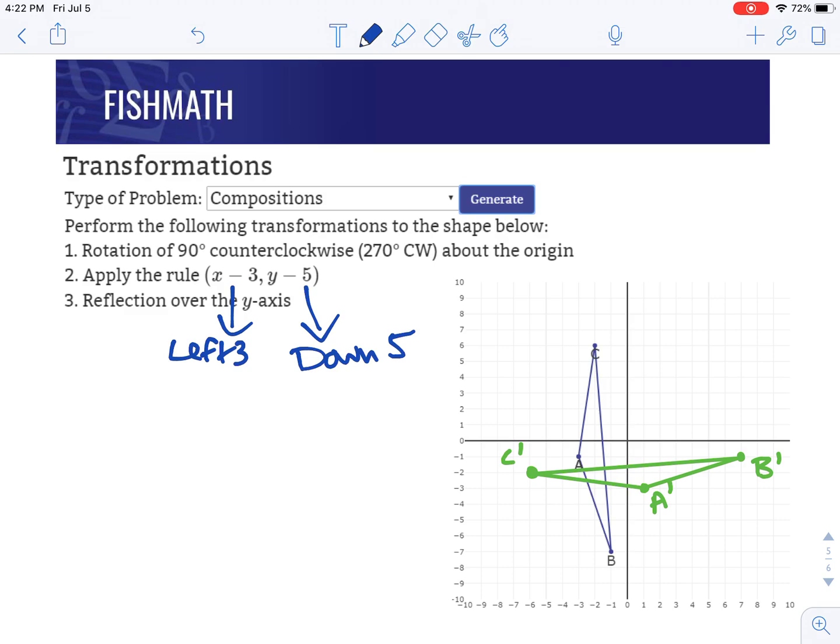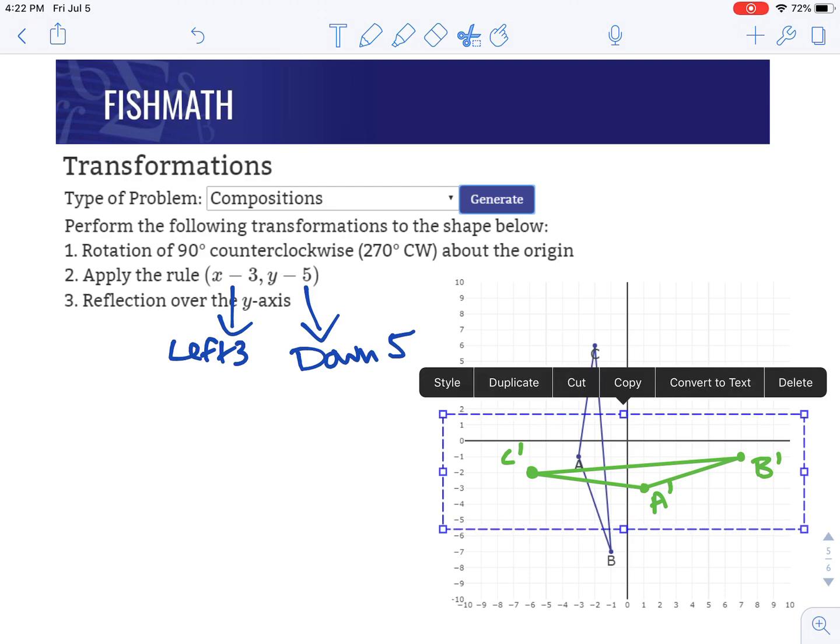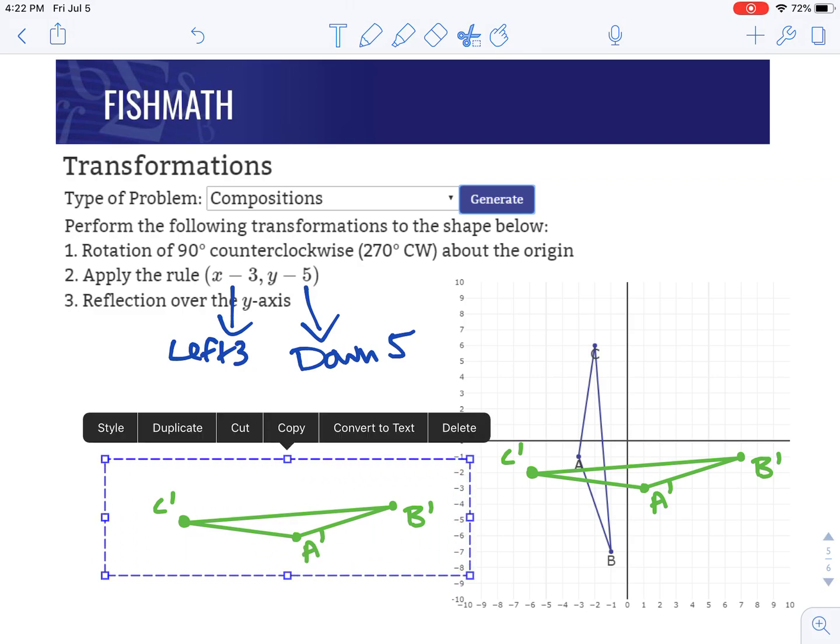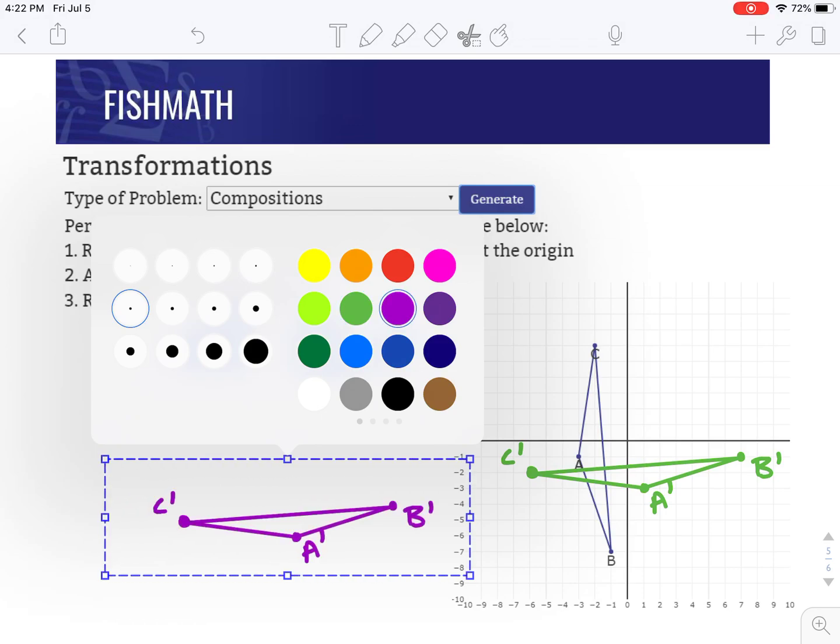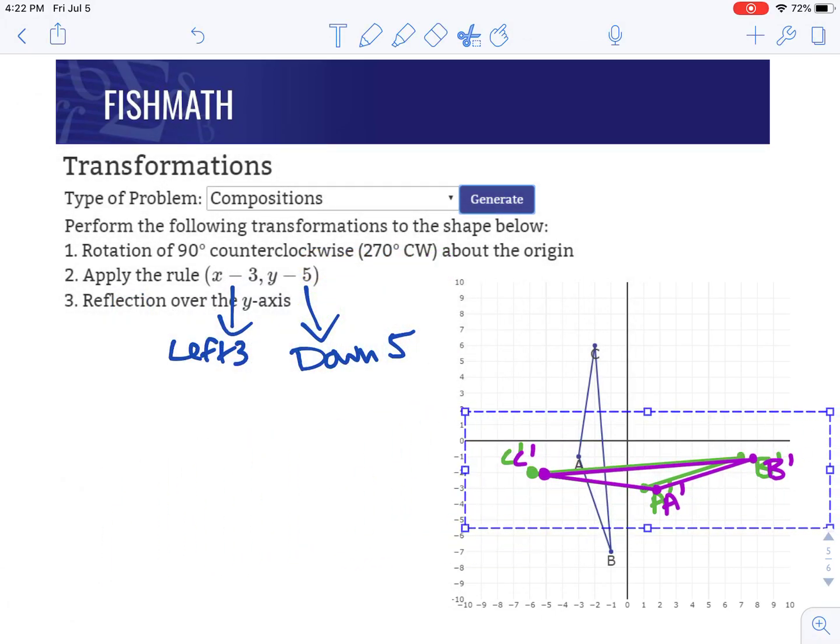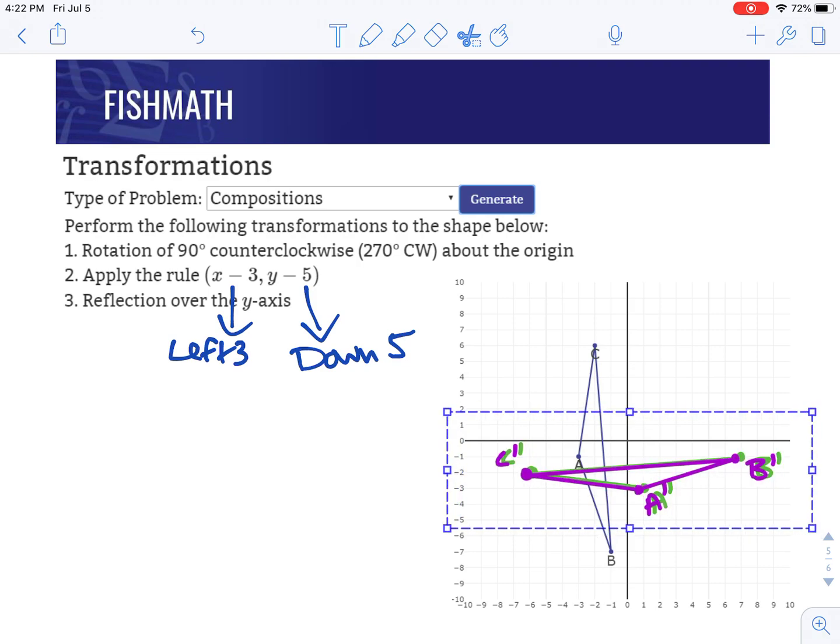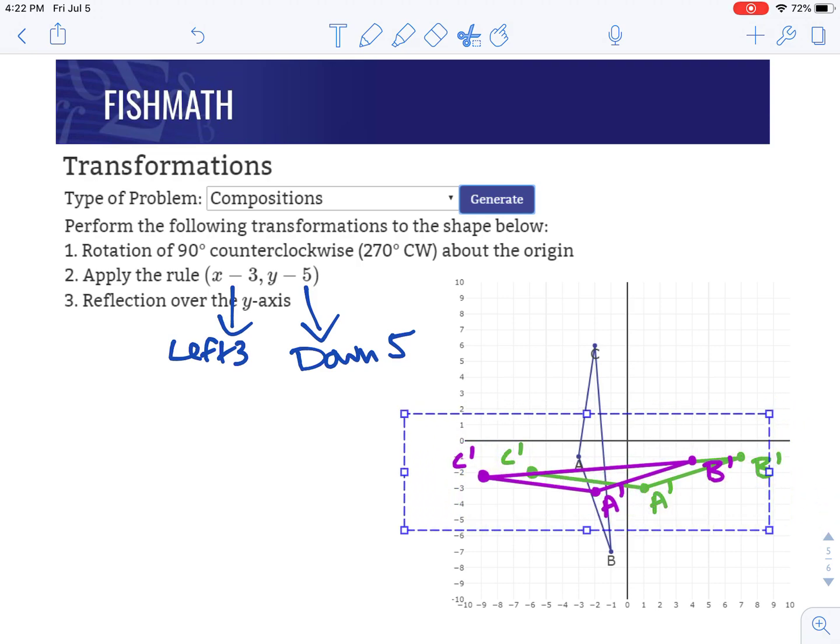We're going to take our new version of the shape here, and we're going to move it according to those directions. I'm going to show you this a little bit differently. I'm going to take a copy of our shape, make it a new color, and we're going to see what happens here. I'm going to take this, I want to translate according to our direction. So we want to go left three, so one, two, three.